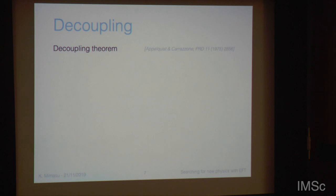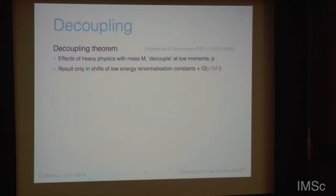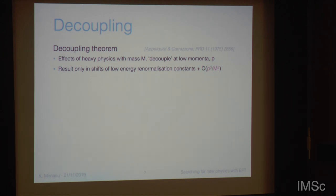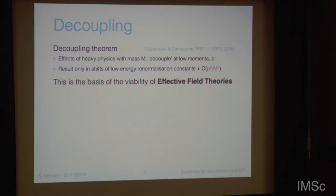You might be able to approximate the effects that depend on this heavy mass scale, and describe them by some kind of expansion in ratios of small scales over large scales to some power — that's what's called power counting. This is formalized in the so-called decoupling theorem by Appelquist and Carazzone in the 70s, where they showed that effects of heavy new physics with a large mass decouple at low momentum P. The impact of heavy particles can only be shifts of the low energy renormalization constants and effects of order P squared over M squared.